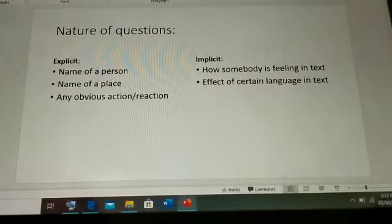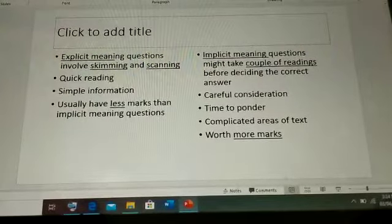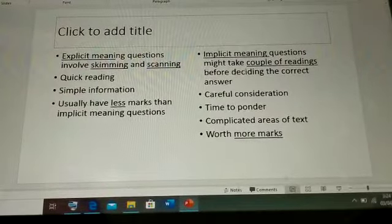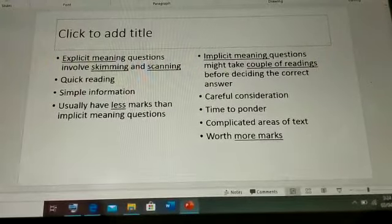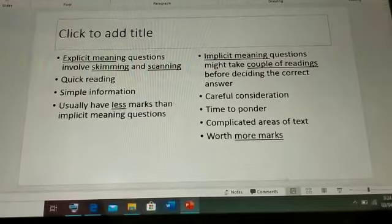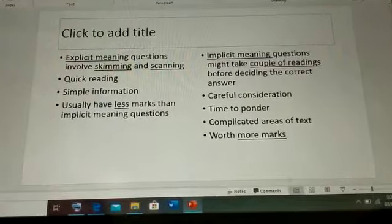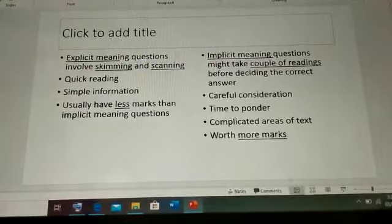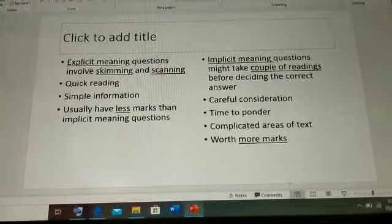When we have explicit meaning questions, we just have to go through it quickly. It involves only skimming and scanning and a quick reading can give us answer of the question of explicit question or simple information is present in the text. And they have usually one mark or sometimes two marks also, but they are quick for us to answer. We don't need to spend a lot of time in answering these questions.